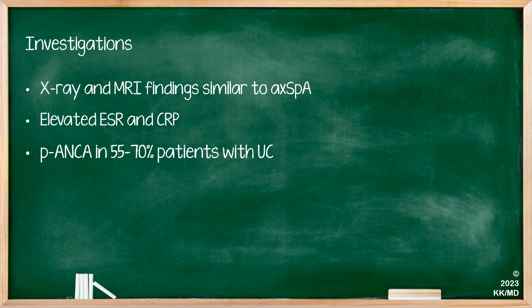Investigations are very similar to investigating someone with any suspected axial spondyloarthritis, so you do x-rays and, if necessary, MRI scans. The findings would be very similar — perhaps evidence of sacroiliitis or inflammatory disease within the spine. There may be an elevated ESR and CRP. With regards to specific tests, P-ANCA can be positive in 55 to 70% of patients with ulcerative colitis, but we'll hear more about that when we cover ulcerative colitis in the gastroenterology section.